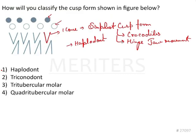So coming back to the question here. So our question simply asks about the haplodont. So the answer to this: the simplest form of the cones which are seen in the crocodile's hinge jaw movement, the answer will be haplodont.